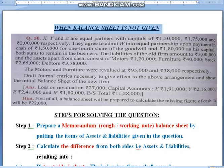The question will represent information in the form of a paragraph like this: X, Y & Z are equal partners with capitals of rupees 1 lakh 50,000, 1 lakh 75,000 and 2 lakh respectively. They agree to admit W into equal partnership upon payment in cash of rupees 1 lakh 50,000 for one fourth share of goodwill and 1 lakh 80,000 as his capital, both sums to remain in the business.